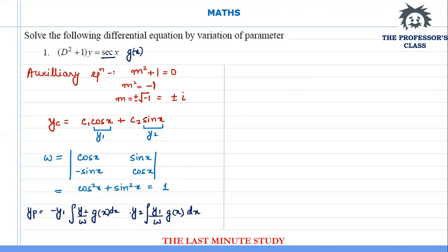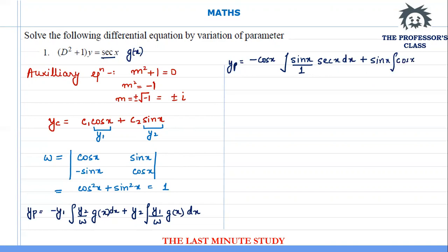Substituting the values: yp equals cos(x) times the integration of sin(x)·(1/1)·sec(x) dx, plus sin(x) times the integration of cos(x)/1·sec(x) dx. Let's simplify this a little bit further.